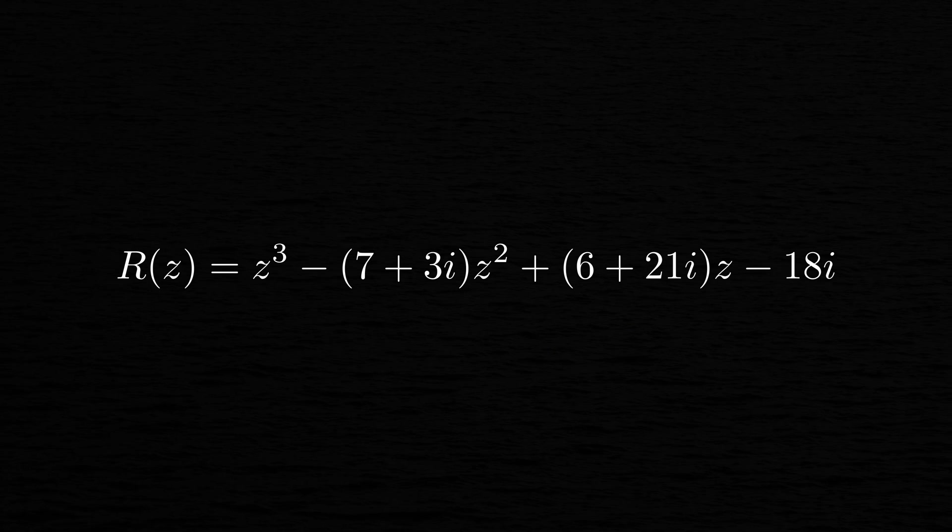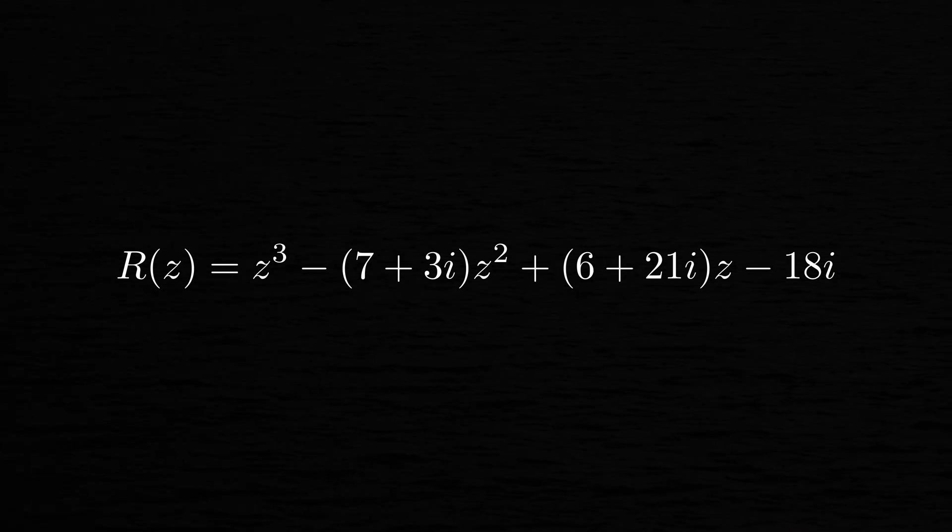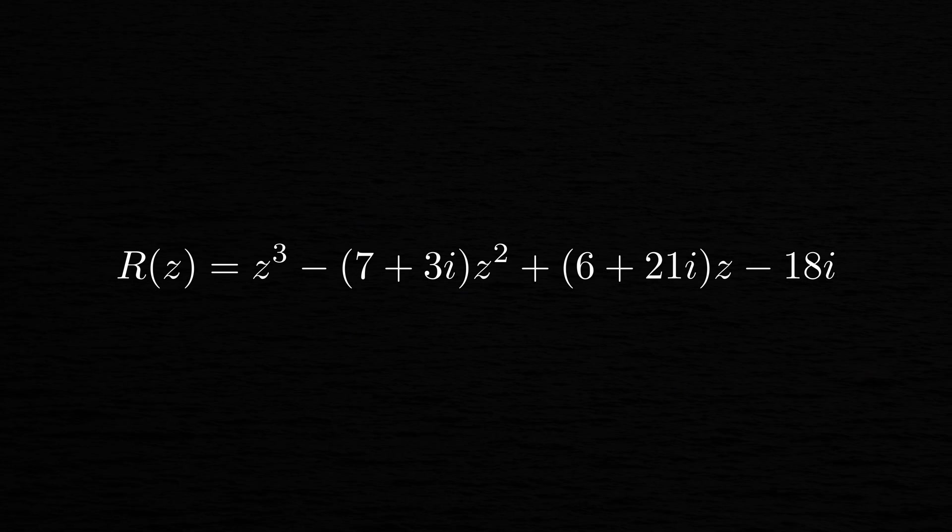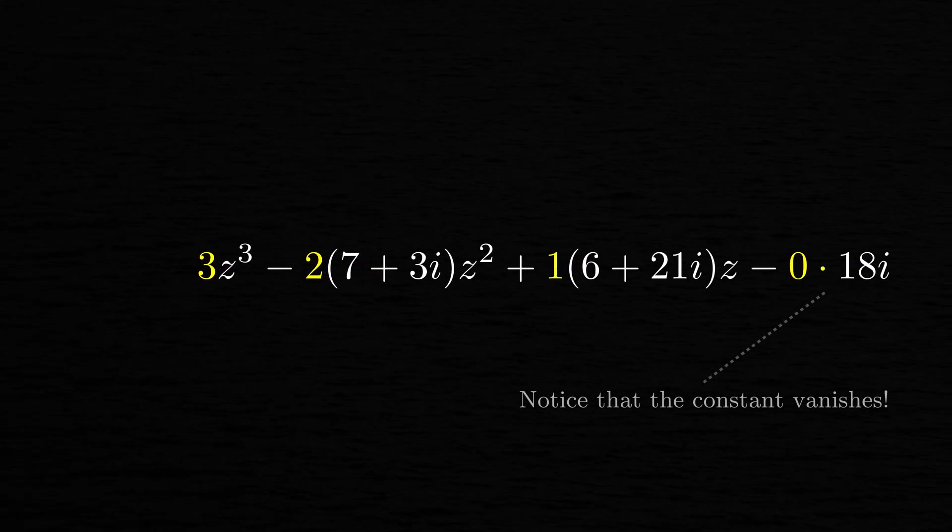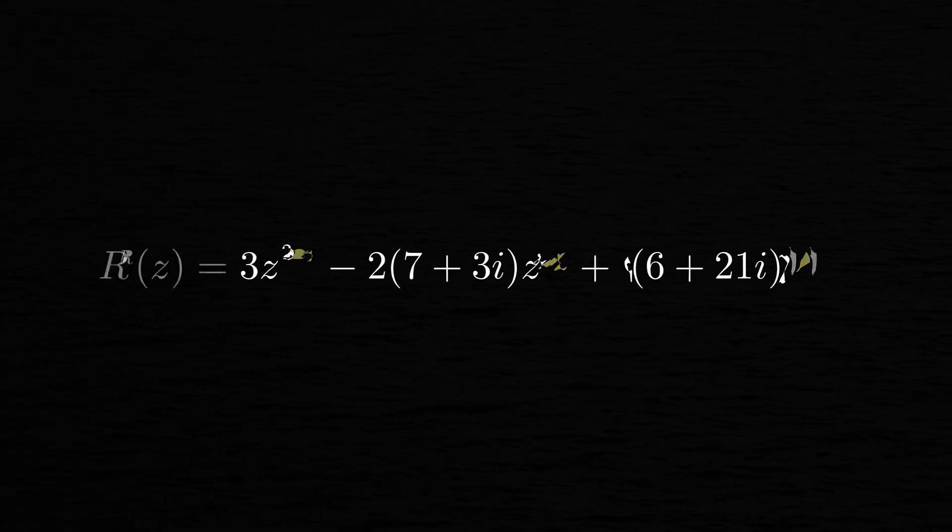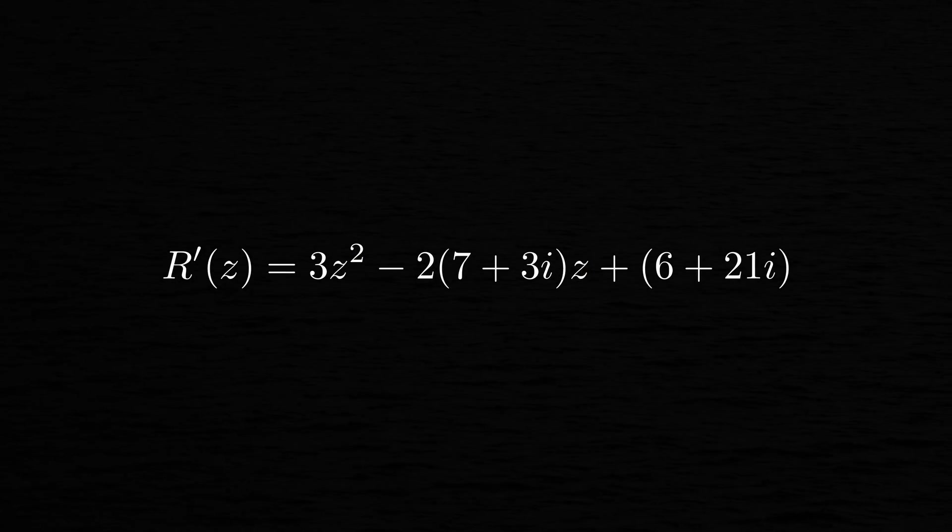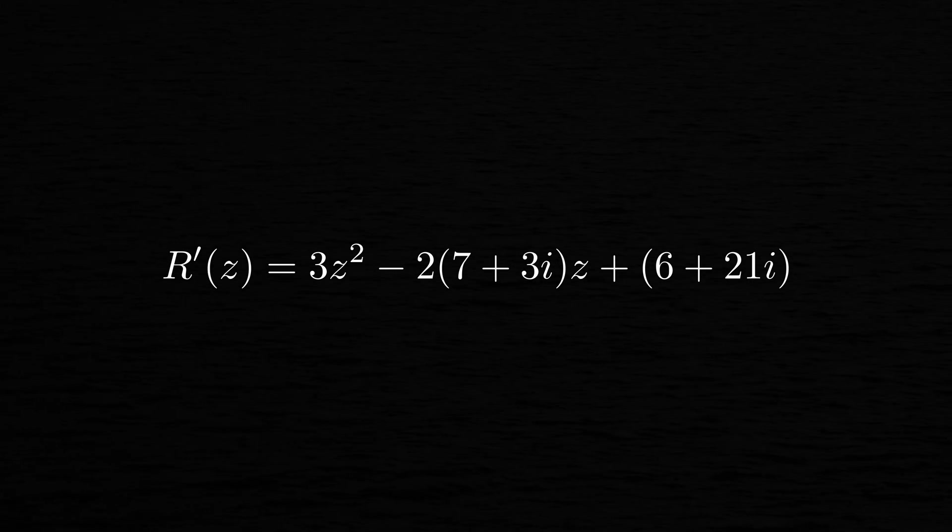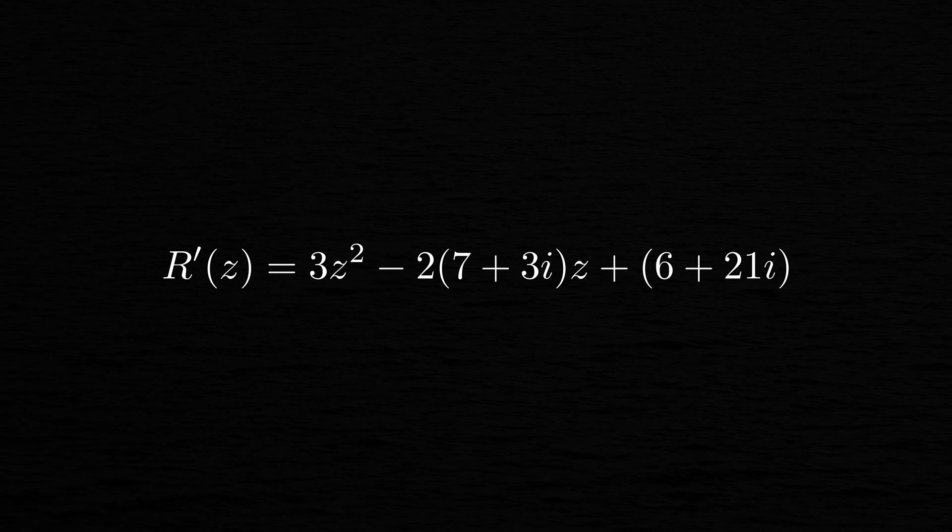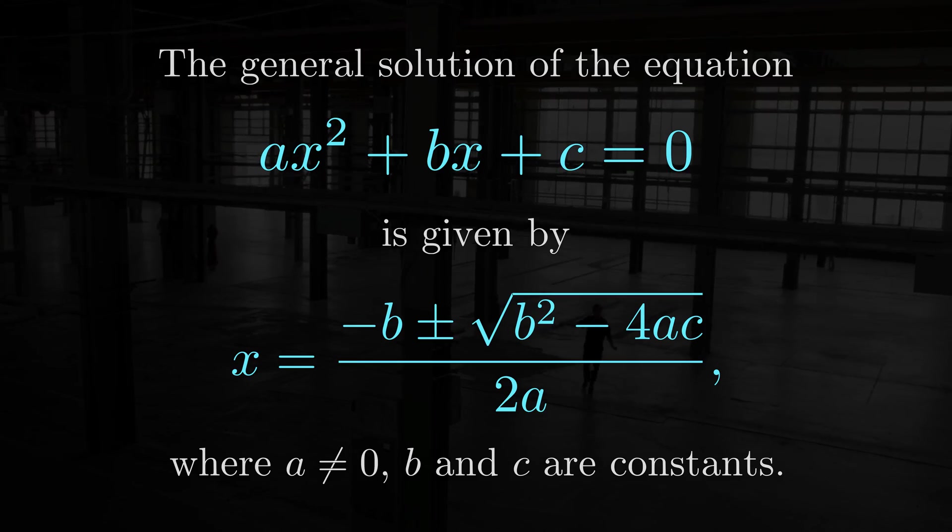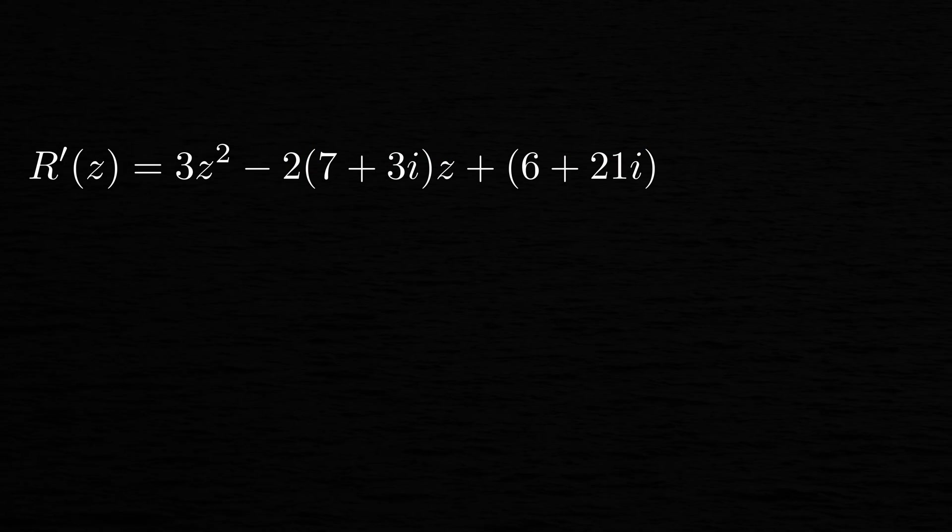Now, if we take the derivative of r with respect to z, it turns out that we just have to multiply each term by its exponent of z, and then subtract 1 from each exponent. In other words, this is identical to how we take the derivative of more familiar polynomials with real valued coefficients. Now, if we want to, we can set r' equal to 0, and then use the quadratic formula, which lets us factor r' like this.